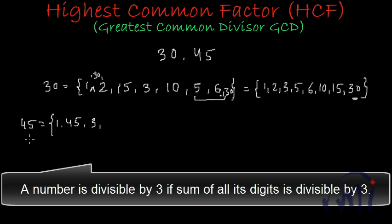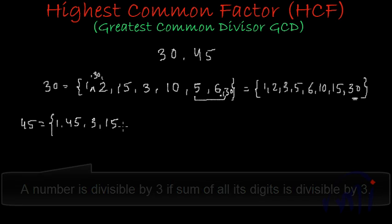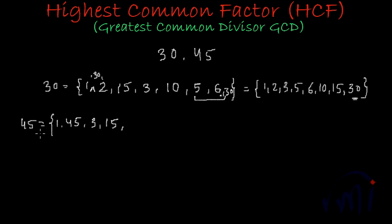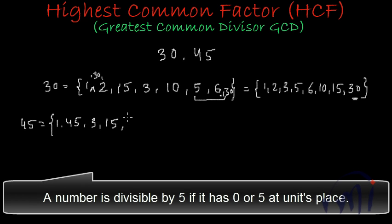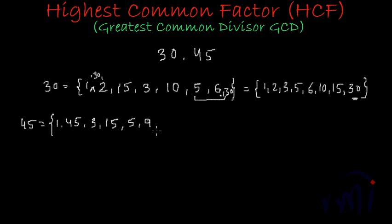When I divide 45 by 3, I get 15 — so 15 will also be a factor of 45. It is an odd number so it will not be divisible by 4 either. Let's check divisibility by 5: 5 nines are 45, so 5 is a factor of 45 and 9 will also be a factor of 45. After 5 comes 6, but 6 is an even number and 45 is odd, so 45 will not be divisible by 6.